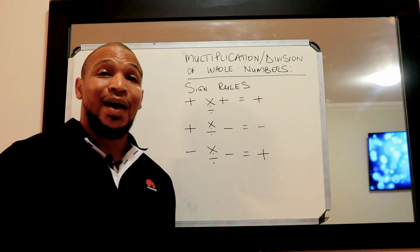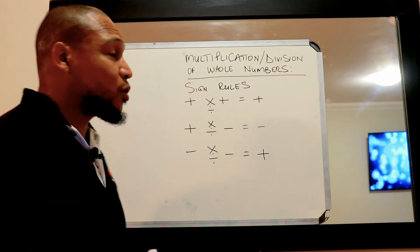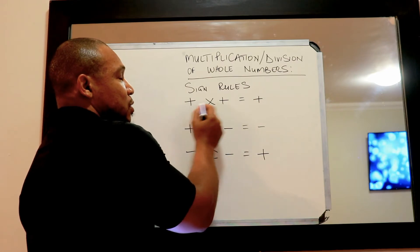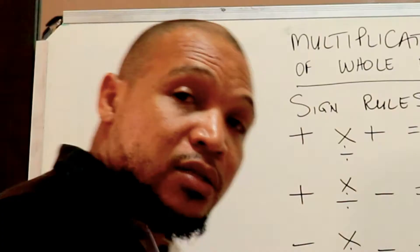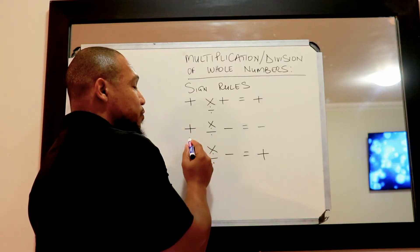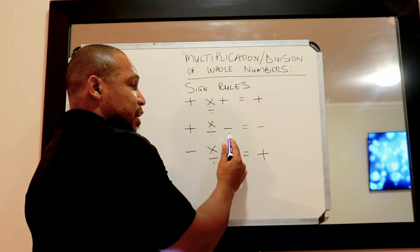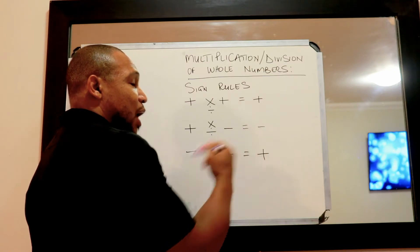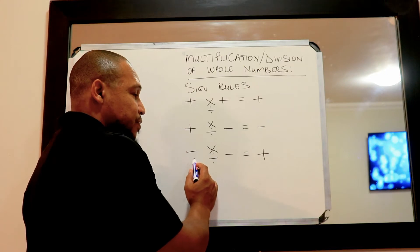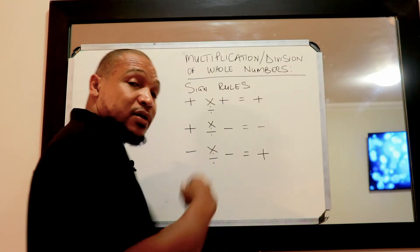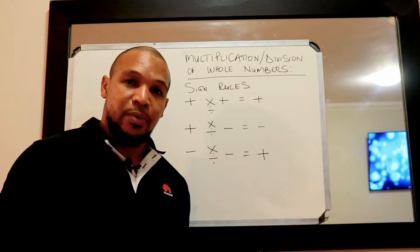The first set of rules only applies when we multiply or divide. When we have a positive and a positive, multiply or divide, we get a positive. When our first number is positive and our second number is negative and we multiply or divide, the outcome of the sign will be a negative. When we have a negative multiplied or divided by a negative, our outcome will be a positive.